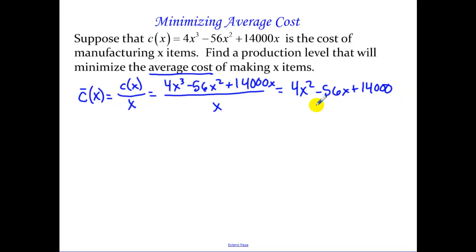This is my average cost function. What is the derivative of my average cost function? Derivative of average cost is going to be 8X minus 56. I set that equal to 0 and get X to be 7.